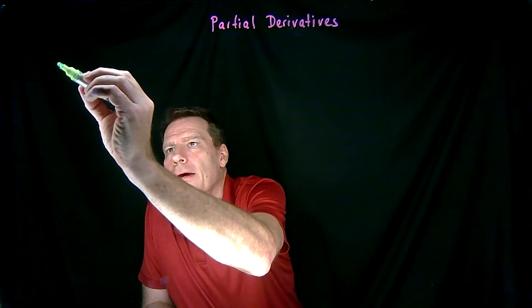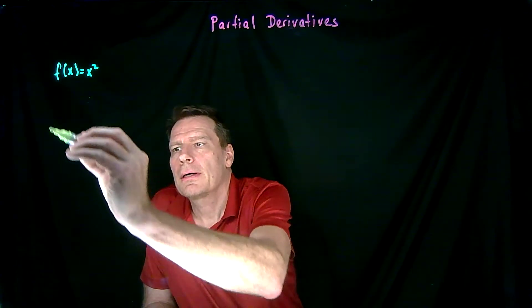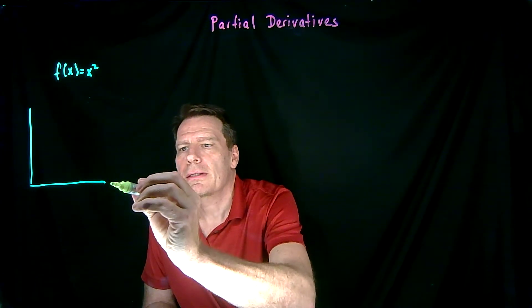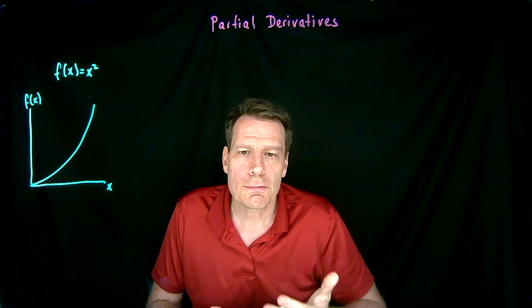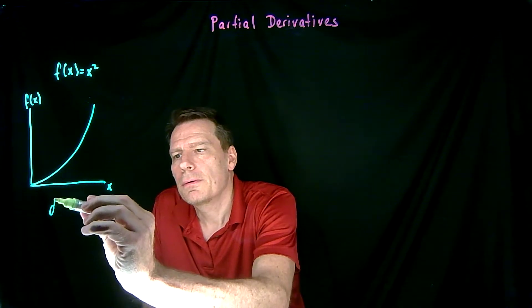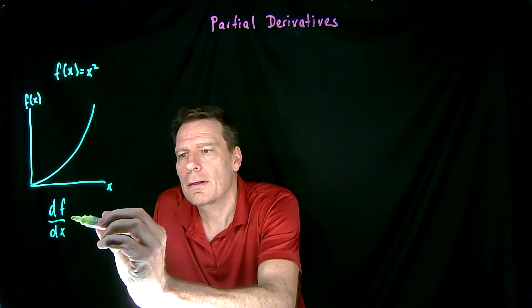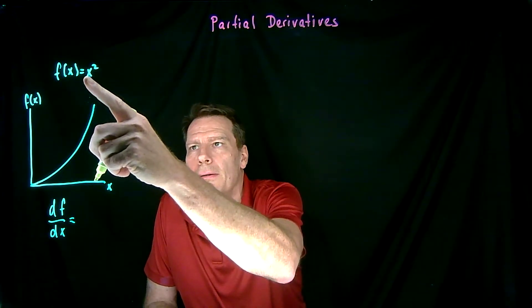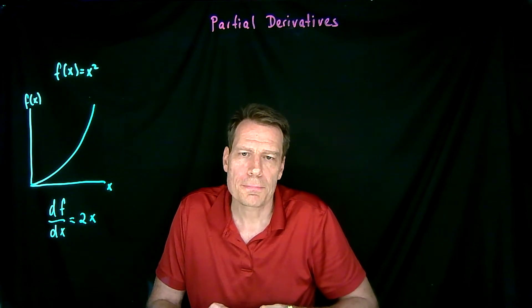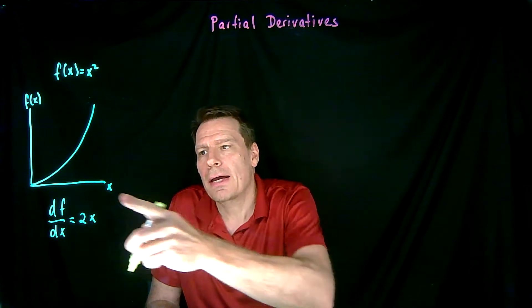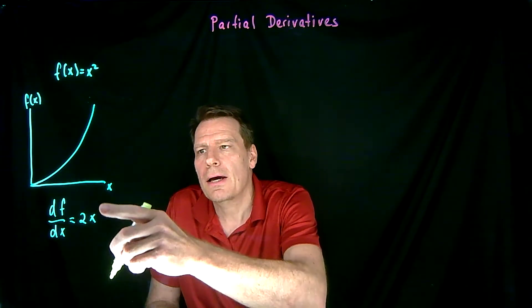Everyone in this class has had some calculus, and so everyone has been exposed to the idea of a derivative, which is simply the slope of a function. So if we have a function like f of x equal to x squared, you know how to take the derivative of such a function. The derivative of f with respect to x is equal to — we take the exponent out front times x, and subtract 1 from the exponent — so we're just left with 2x. And what that derivative means is that for any x value, we can now know what the slope of this function is.